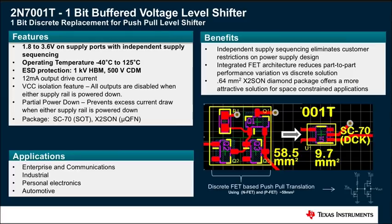The key advantages of using the 2N7001T instead of discrete components like FETs and resistors are smaller overall implementation size, reduced component count, simplified signal routing, and better overall signal performance without significantly impacting implementation cost.